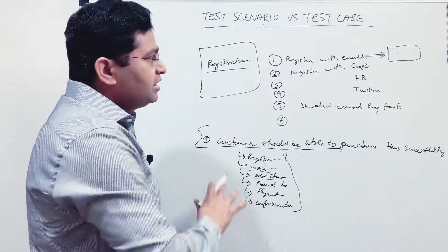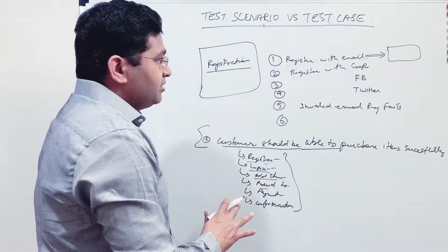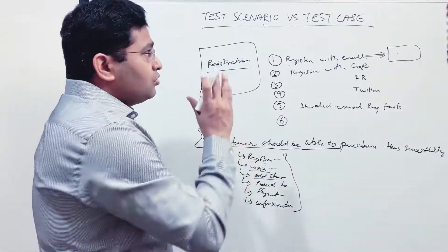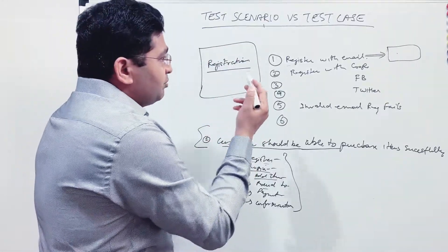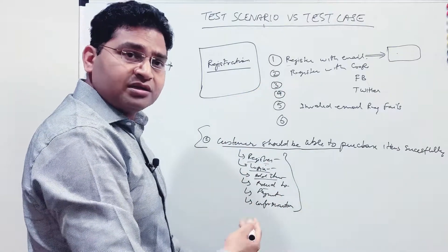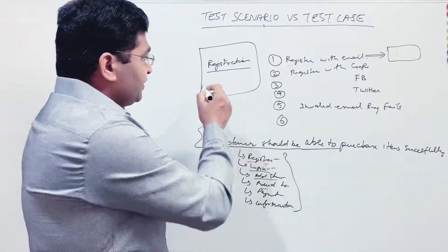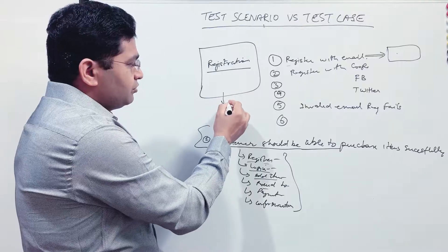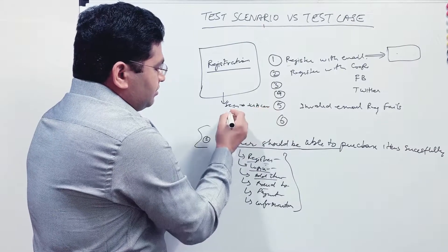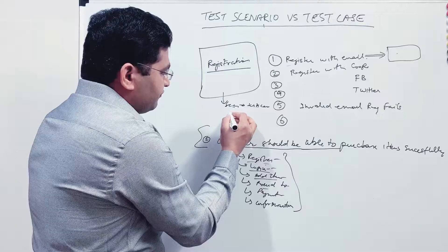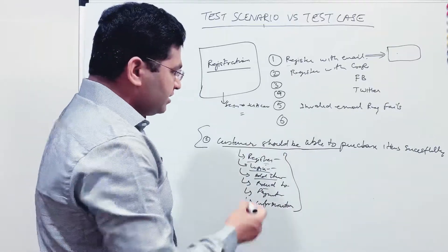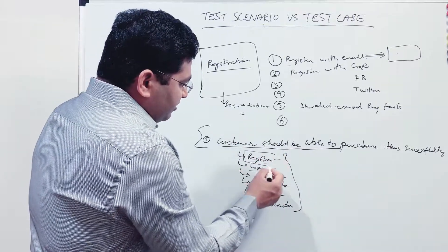That is a very important concept to understand practically. You need to understand what a scenario is, what a test case is, and that for a particular scenario there could be one test case or multiple test cases. The key thing is: from requirements you have scenarios, and based on scenarios you write the test cases. For an end-to-end scenario, you write multiple test cases to fulfill that scenario.